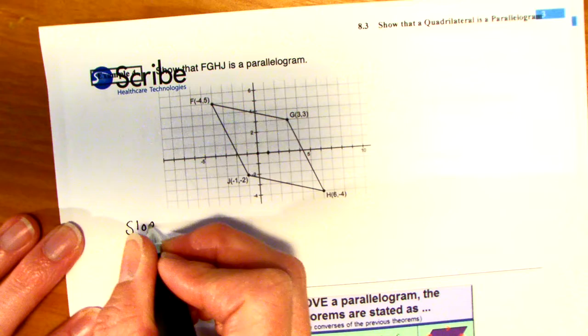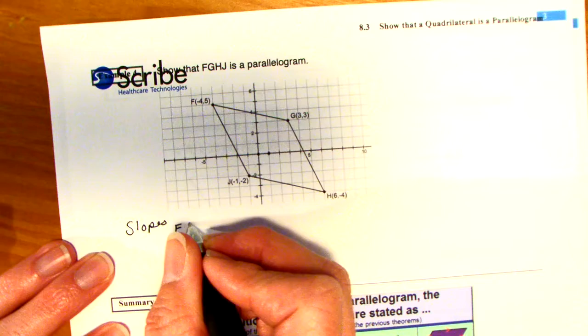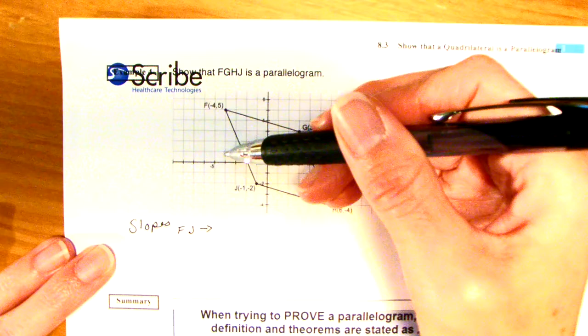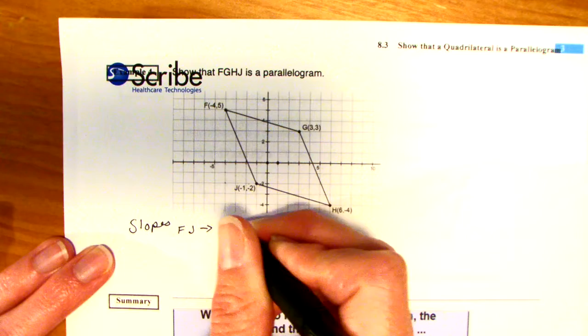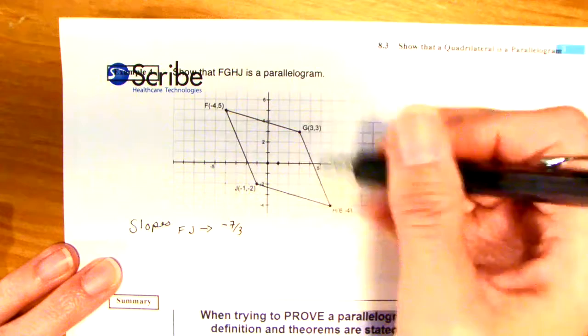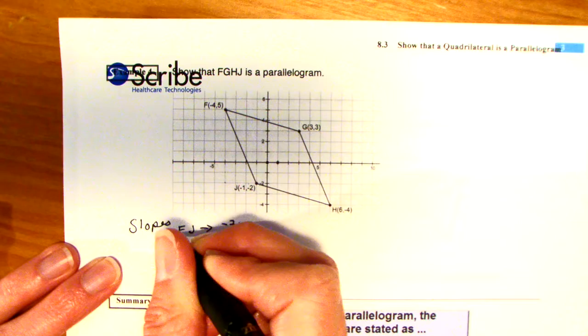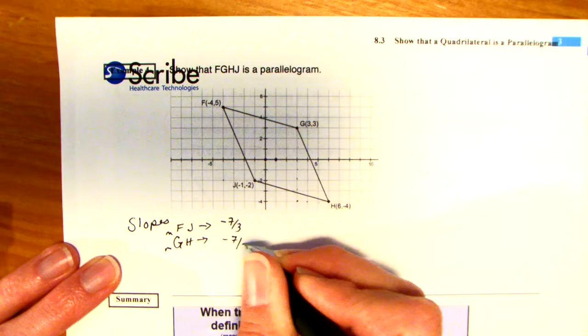So, let's do the slope of FJ. So, to go from here to here, I have to go down 1, 2, 3, 4, 5, 6, 7 over 1, 2, 3. And let's do the slope of GH. I should put a little m there. So, I have to go down 7. 1, 2, 3, 4, 5, 6, 7 over 1, 2, 3.